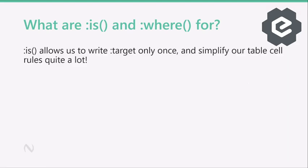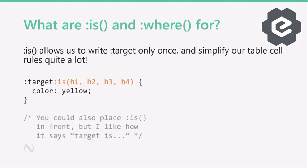So `:is()` and `:where()` allow us to reduce the number of times we write certain selectors and eliminate this repetition. For example, with the headings, you only need to write `:target` once, then use the `:is()` pseudo-class — inside the brackets you specify the four different headings. So we attach a single `:is()` pseudo-class to `:target`, only need to use it once, and it's all just one line. This is much easier to read. And because these two pseudo-classes are simple selectors, you can arrange them in any order. You could put the `:target` after the `:is()`. But I kind of like how it reads as `:target:is(h1, h2, h3, h4)`.